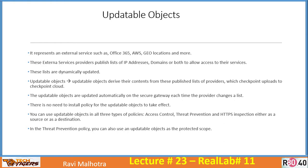What happens instead is that Check Point connects to these online services and updates these objects on the Check Point cloud. As a gateway, you connect to the Check Point cloud. These external services provide a published list of IP addresses and domains to allow access. The lists are dynamically updated and administrators do not need to change them manually. Updatable objects derive their contents from these published lists, which Check Point uploads to Check Point cloud.